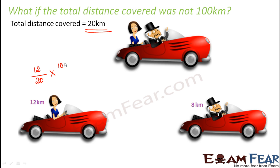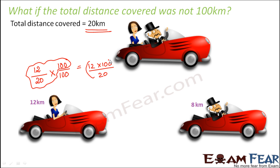We do a very simple thing: we multiply the numerator and the denominator by 100. So now we have the entire thing divided by 100. This actually becomes 12 × 100 divided by 20 percent, because anything divided by 100 is percentage, and that divided by 100 can be replaced with the percentage symbol. So this works out to 60 — 60 percent. That means Mrs. Smith this time covered 60 percent of the journey.